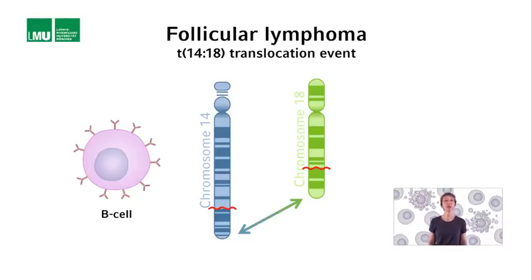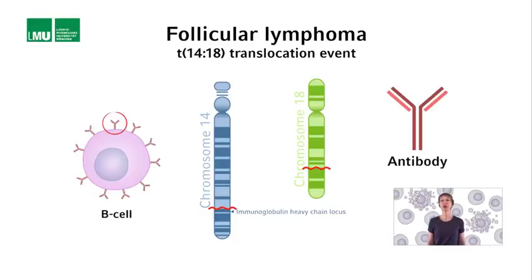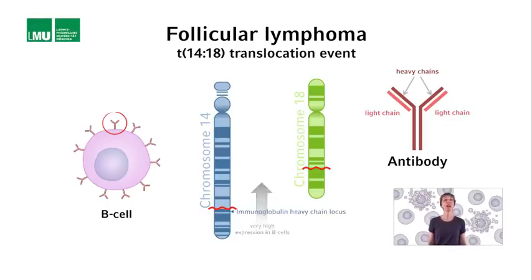What happens to the genes located at the breakpoints on chromosome 14 and chromosome 18? On chromosome 14, the translocation is in the locus that encodes an immunoglobulin heavy chain, also referred to as Ig heavy chain. Ig heavy chains are proteins that are part of a protein complex that B cells exhibit on their cell surface, also often referred to as an antibody. Since exhibiting antibodies on their cell surface is one of the major jobs of a B cell, many Ig heavy chains are needed. The Ig heavy chain gene is therefore very highly expressed in B cells, accomplished through an enhancer located downstream of the Ig heavy chain transcription unit.